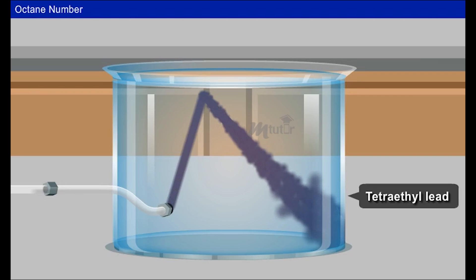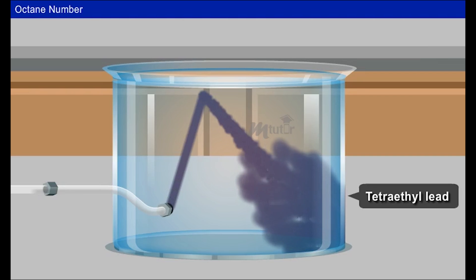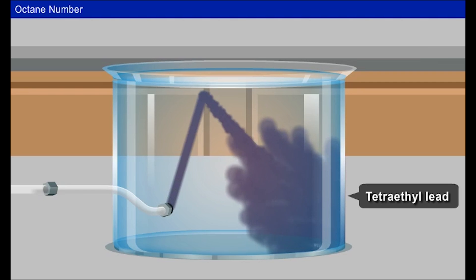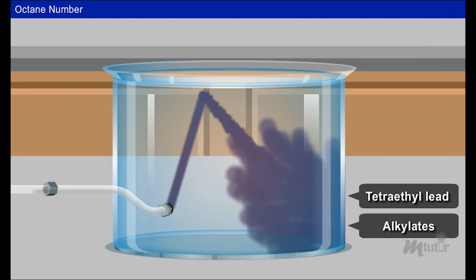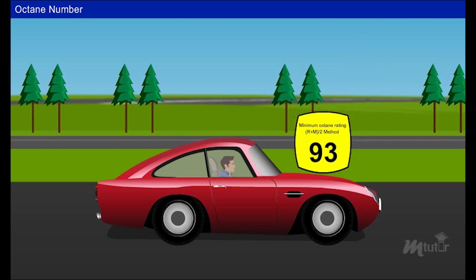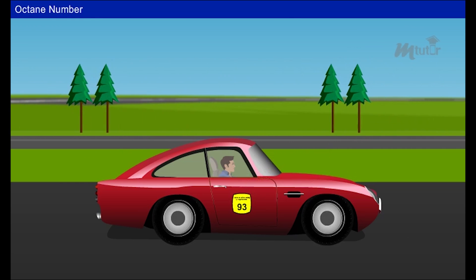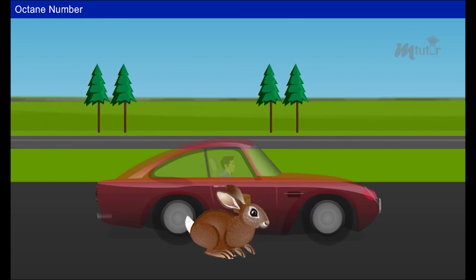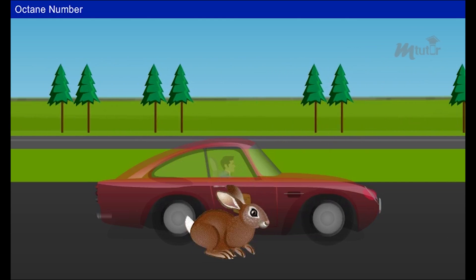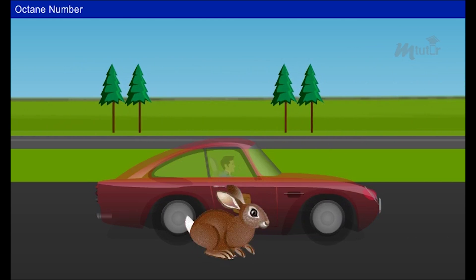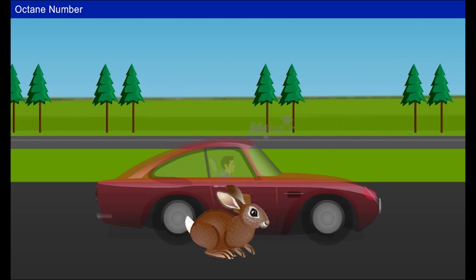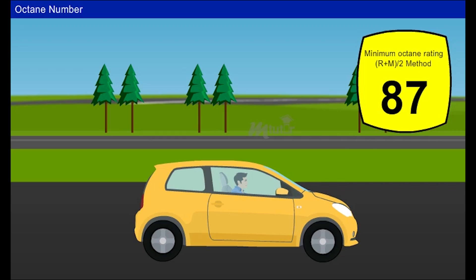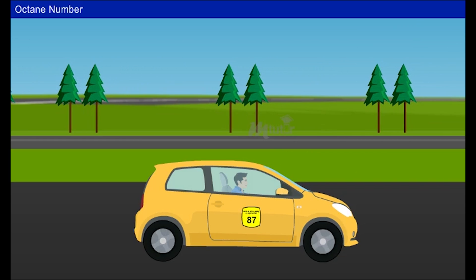Octane number can be improved by different methods. Tetra ethyl lead (TEL) is the most common anti-knocking agent added to improve octane number. Nowadays octane number is improved by adding alkylates to gasoline. Octane numbers for gasoline used in automobiles vary — higher performance cars require gasoline with a higher octane rating, as fuel with a higher octane rating prevents knocking in high performance cars.